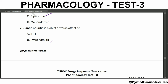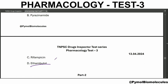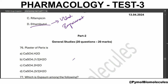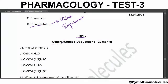Optic neuritis is the chief adverse effect of ethambutol. It is difficult to treat ethambutol-induced visual impairment in children. That's all for part one - let's go to part two, general studies.